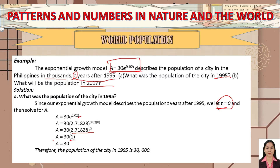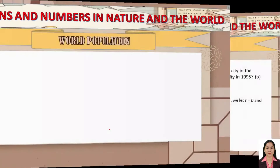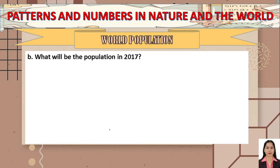The population of the city in 1995 is 30,000. It is 30 in the formula because the problem states the population is in thousands, so we multiply 30 by 1,000 to get 30,000.